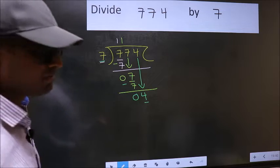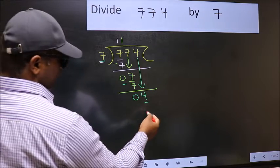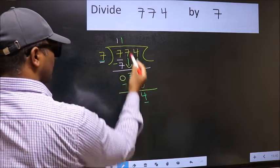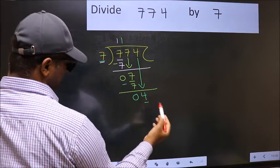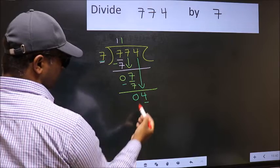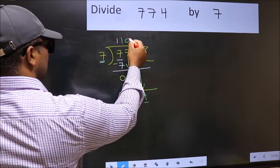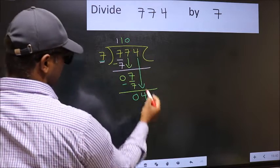Instead, what you should think of doing is which number should be right here. If I take 1, we will get 7. But 7 is larger than 4. So what we should do is we should take 0. So 7 into 0, 0.